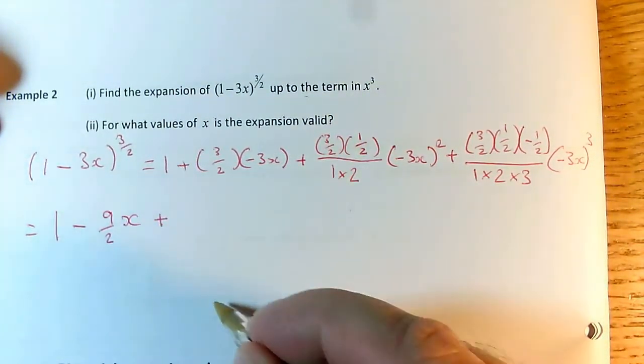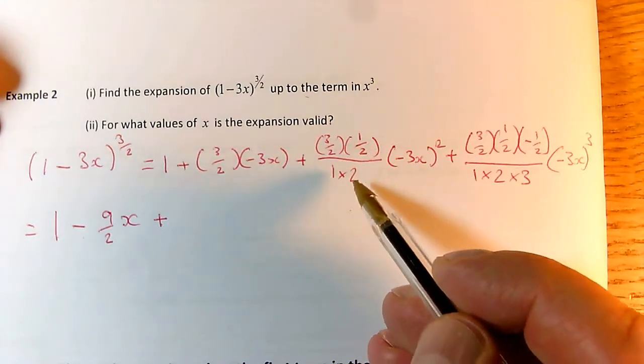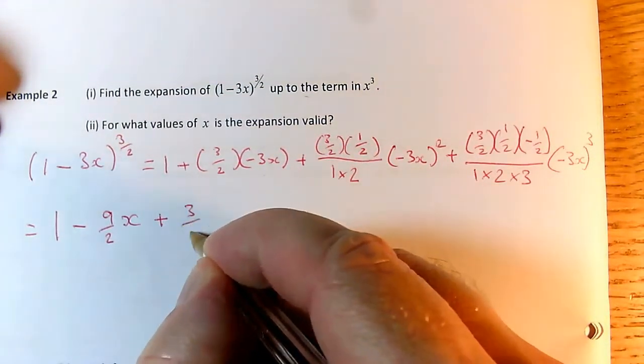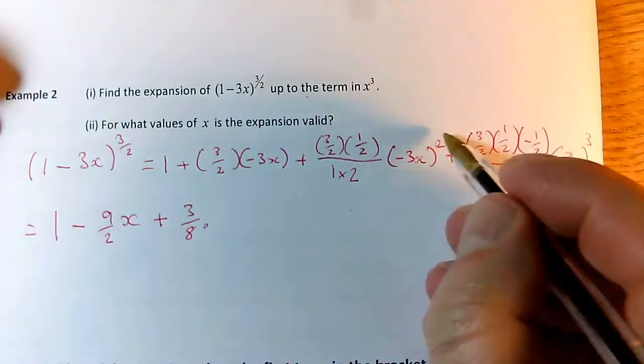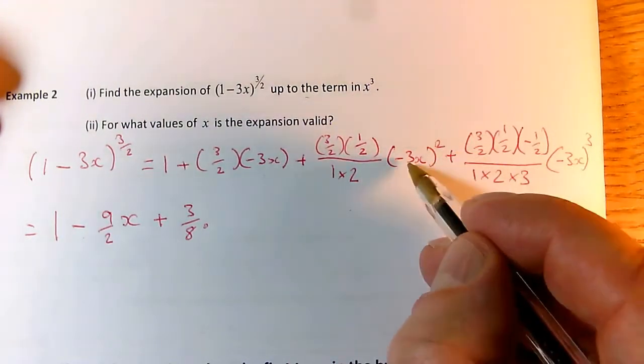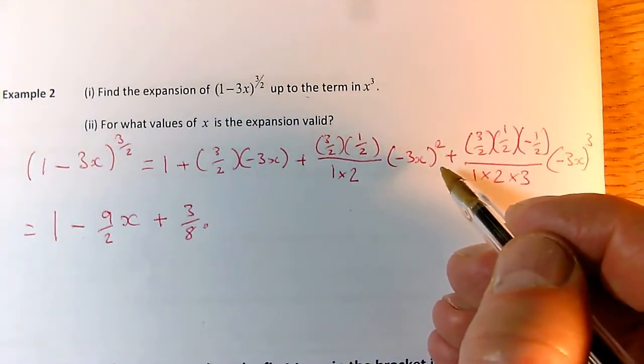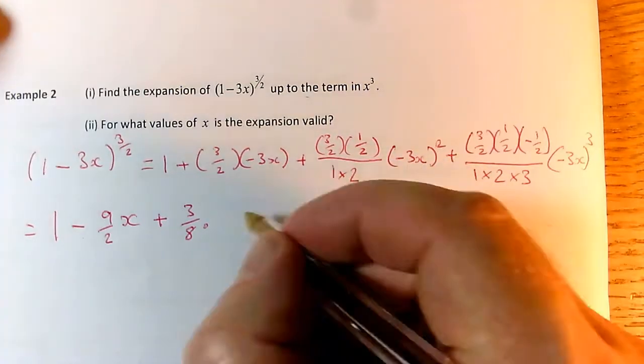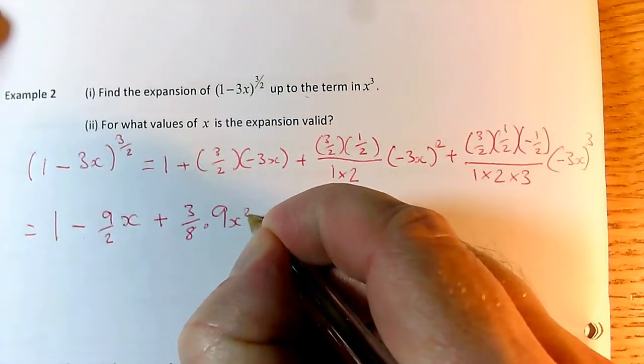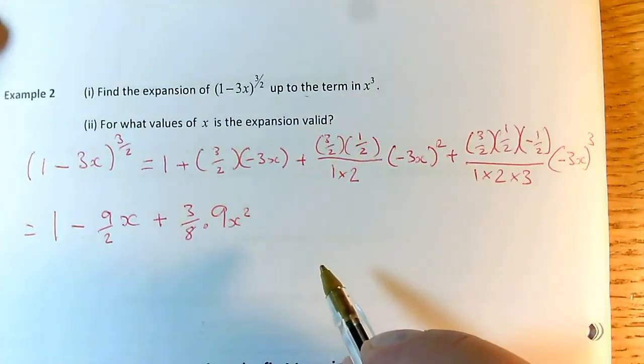And then the next bit. Now, this, I think, needs to be done in two stages. You can use your calculator if you wish. 3 over 2 times 1 over 2 divided by 2 is 3 eighths. 3 eighths times minus 3x squared. The brackets are really important. A minus inside the bracket squared becomes a plus. And 3x squared is 9x squared, not 3x squared. So the minus and the 3 are getting squared. That's why the brackets are really important.